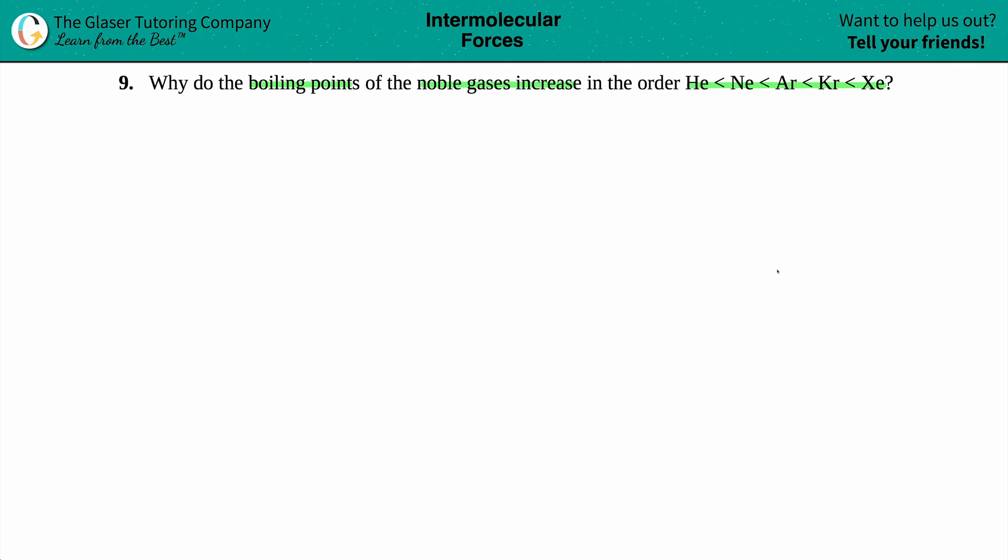Okay, so if I just write that out, so we're looking at all of our noble gases, right? So we have helium, we got neon, we got argon, then comes krypton, and then finally we got xenon.